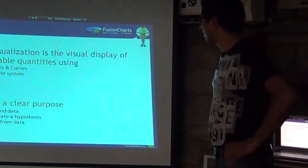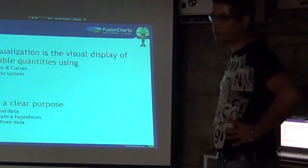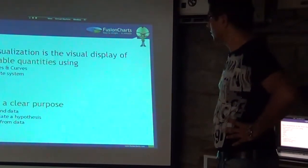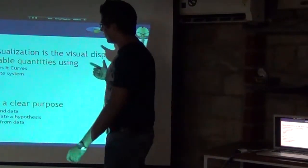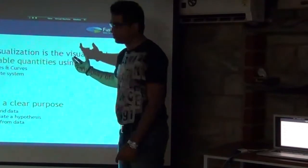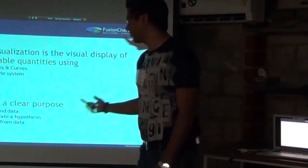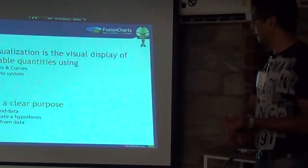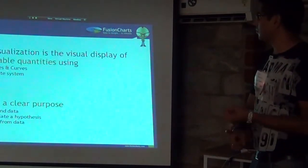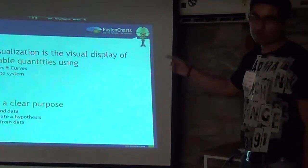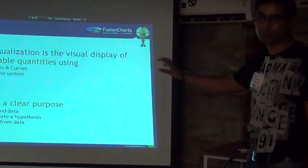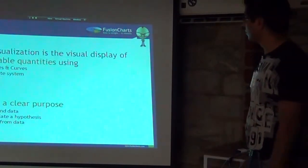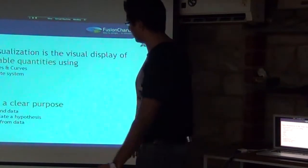Data visualization is a visual display of measurable quantity — anything you can measure — using six things: points, lines and curves; a coordinate system whether in 2D or 3D; numbers; shading; colour; and symbols. There is one more thing on top of it, which is alphabets, which you can put on the data visualization. It has a clear purpose: either to understand data, to substantiate an already known hypothesis, or to discover from data.